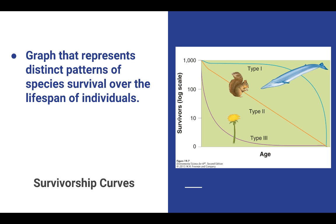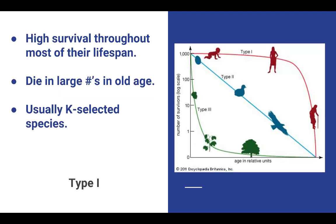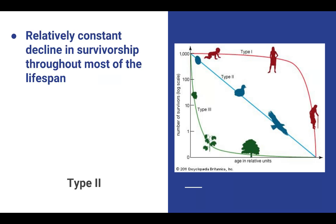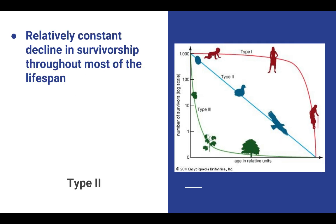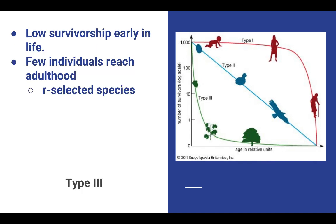Moving on, we're going to look at survivorship curves. In addition to different reproductive strategies, species have distinct patterns of survival over the lifespan of individuals, which we plot as a survivorship curve. There are three types. Type 1 species have high survival through most of their lifespan, but individuals start to die off as they reach old age — humans, whales, and elephants are perfect examples, usually K-selected species. Type 2 shows a relatively constant decline in survivorship — as they get older, numbers steadily drop. Examples include corals or squirrels. Type 3 has low survivorship early in life, with very few individuals reaching adulthood — examples include dandelions and mosquitoes, which are R-selected.